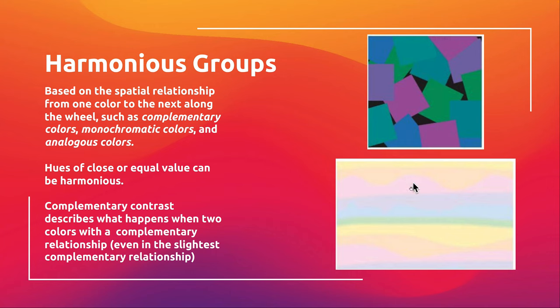In these two examples of harmonious groups, one is a little more saturated and intense. All these colors, while not exactly similar, are related in some way between these harmonious groups. You can even achieve harmonious groups with something like a gradient — a softer color wash — and still get that same harmonious color grouping effect.